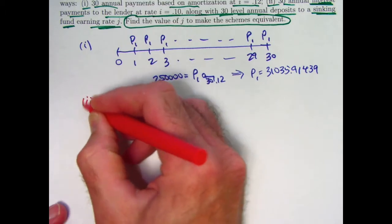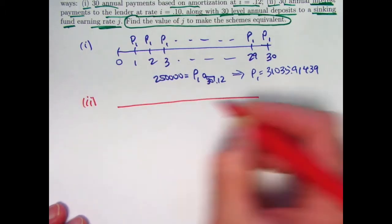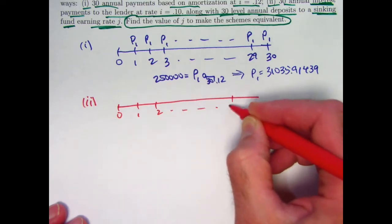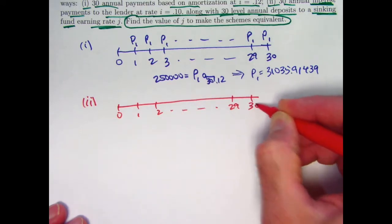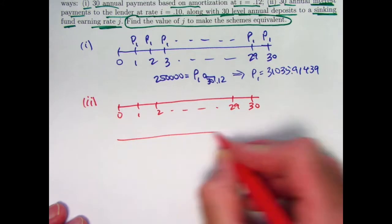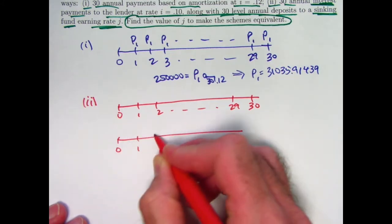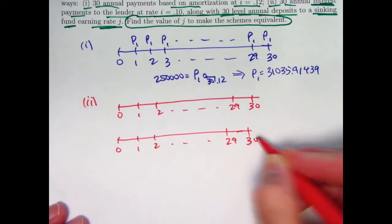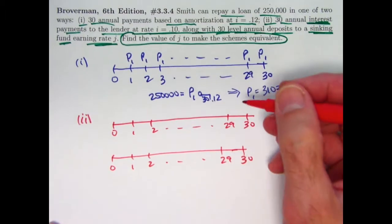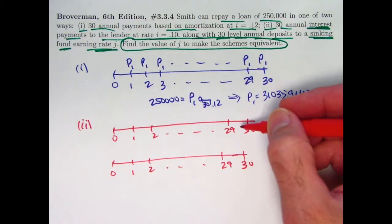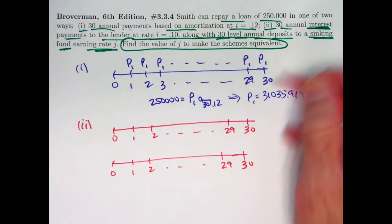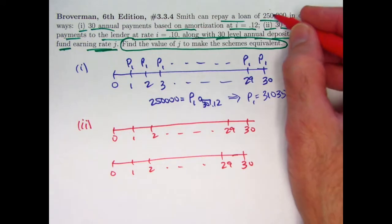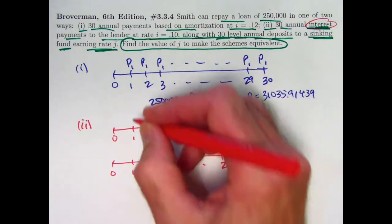What about payback scheme 2 with the sinking fund? Well, you've got two things going on here. You've got your payments to the lender, and you've got your deposits into the sinking fund. The payments to the lender for the first 29 years here are just interest. Just interest there. 10% of $250,000 is $25,000.